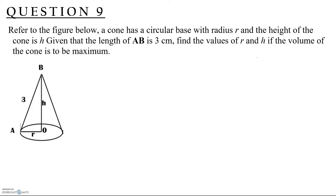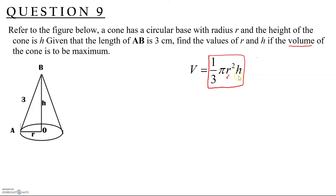Question 9: A cone has a circular base with radius R and height H. Given that the length AB is 3 cm, find R and H if the volume of the cone is to be maximum. We focus on the volume formula: V = (1/3)πR²H. Since there are two variables, we need to express one in terms of the other.